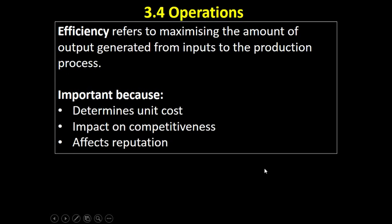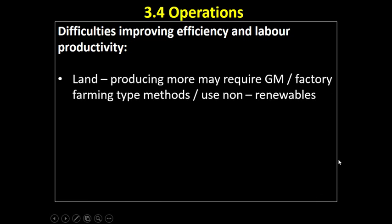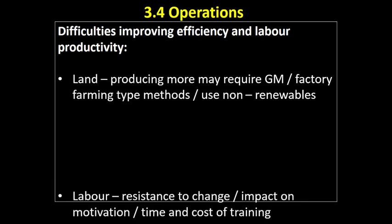What are the difficulties? In terms of increasing the productivity of land — producing more from the same amount of land — it may require genetically modified inputs, factory farming methods, or fertilizers, which can have an awful impact on the environment. Using non-renewable resources also raises ethical considerations: do we want to squeeze as much as we can out of the land and ruin it for future generations? Maybe not.